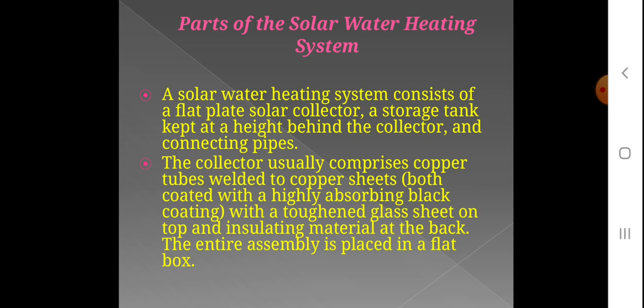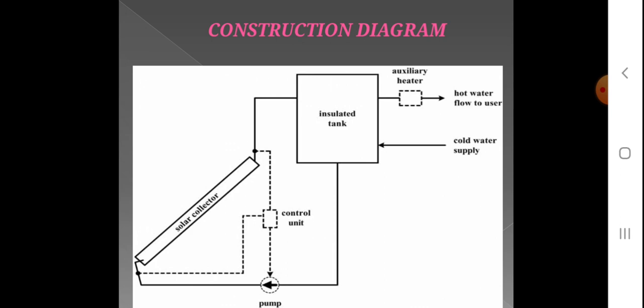The flat plate collector has a toughened glass sheet on the top and insulating material at the back. It contains copper sheets, copper tubes, and black coatings. The whole assembly is placed in a flat insulated box.